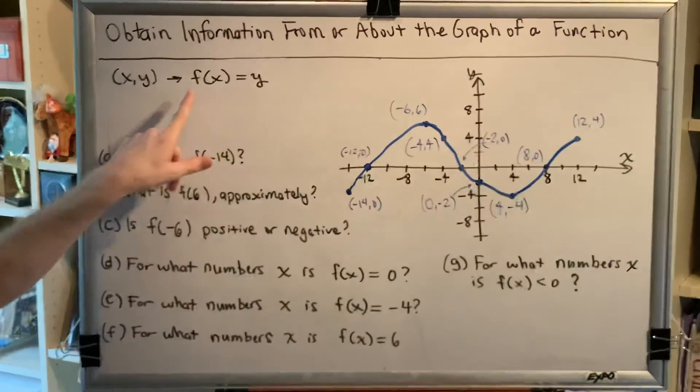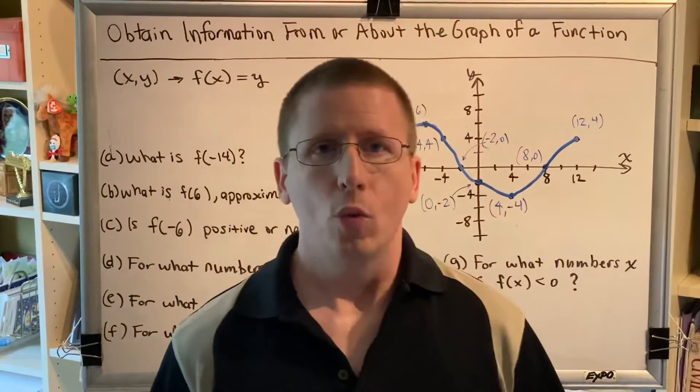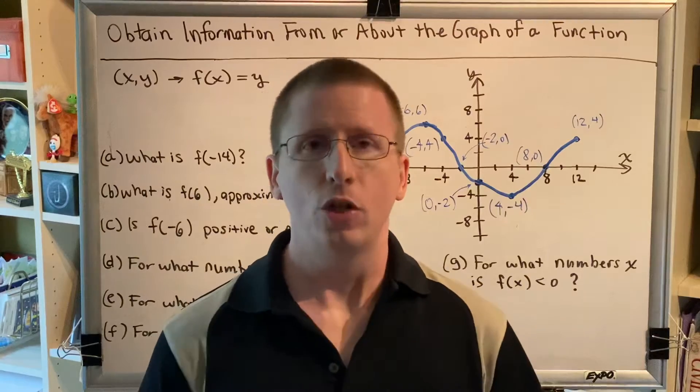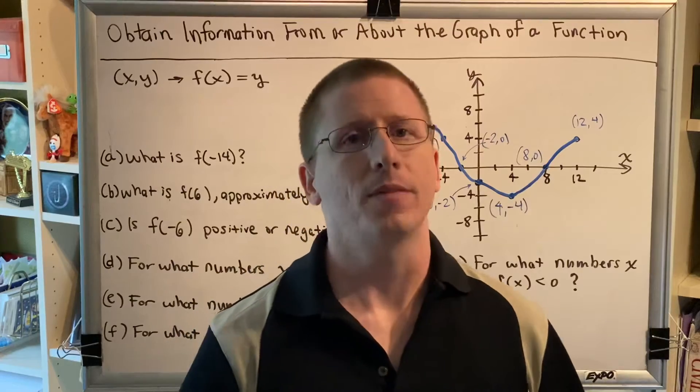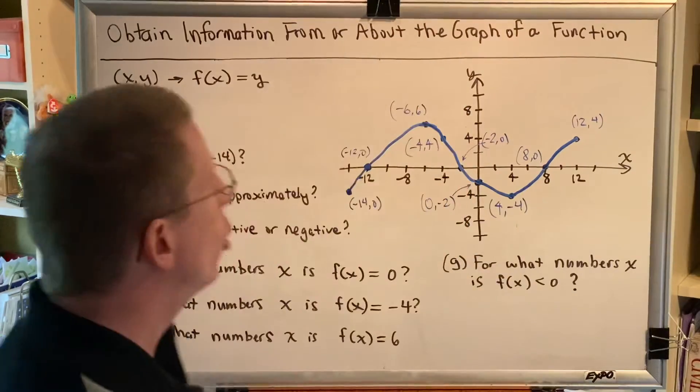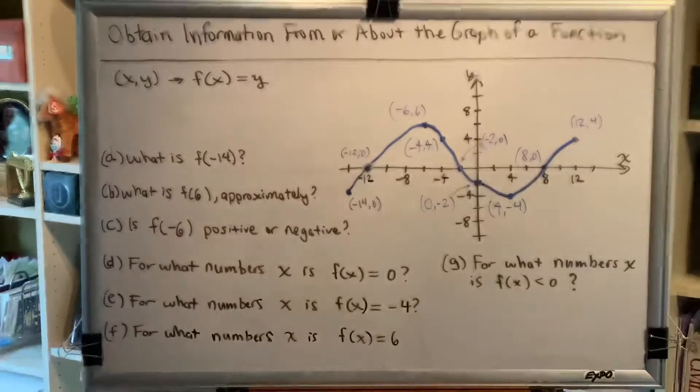For example, the name of that machine might be f. When an input x goes into a machine named f and the instructions are followed, the output that comes out is y. With this in mind, we can convert an ordered pair into function notation.